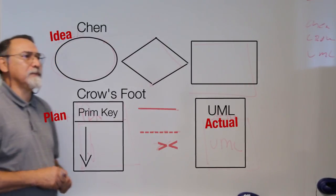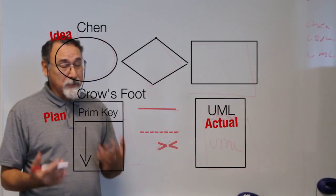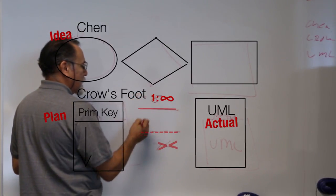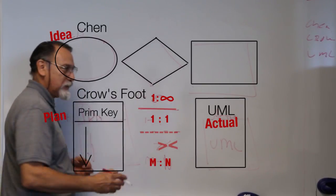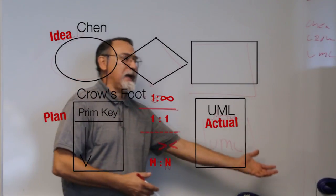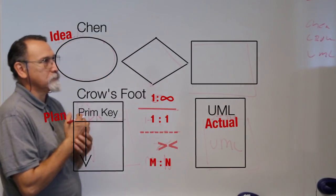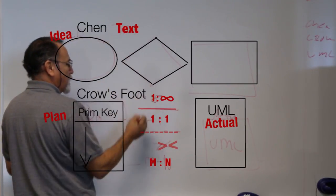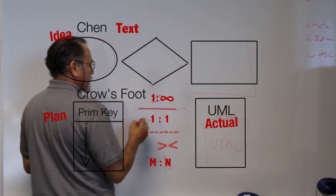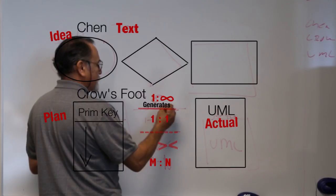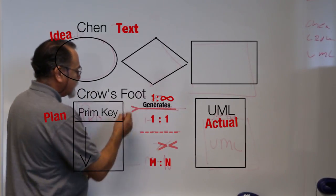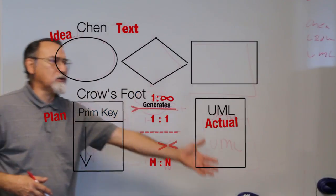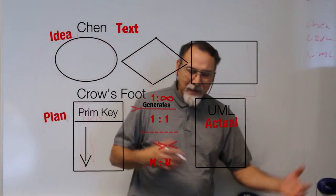Sometimes pictures do not give enough information, so there's also the use of one-to-many, one-to-one, or many-to-many notation to help get the idea across of how information flows. There's also a lot of text involved — text is added on the line. For example, sometimes you see the word 'generates.' So there is the line, the chevron, one-to-one, with text, with numbers — all these items are used to help get the idea across of what's happening in the database.